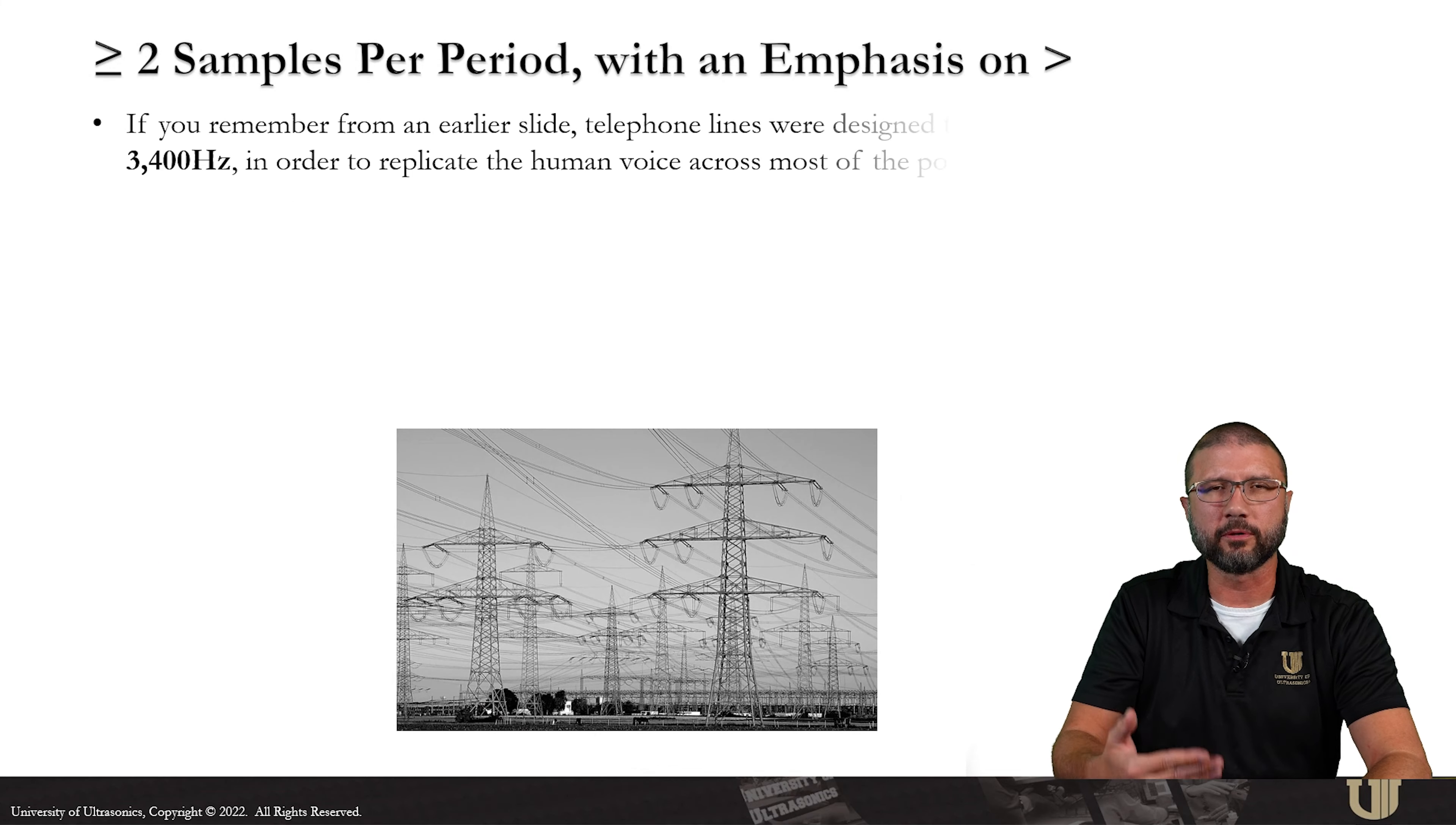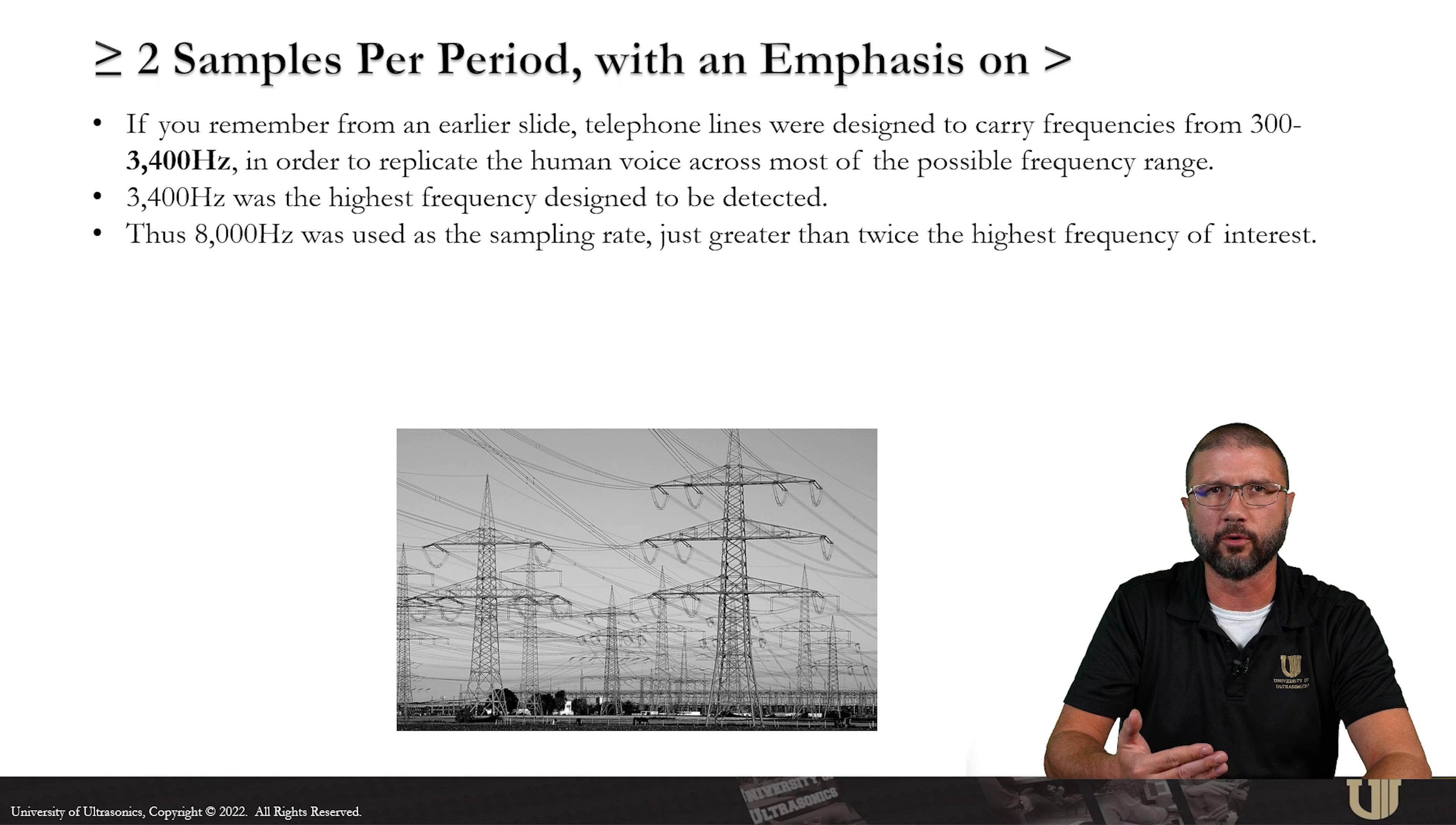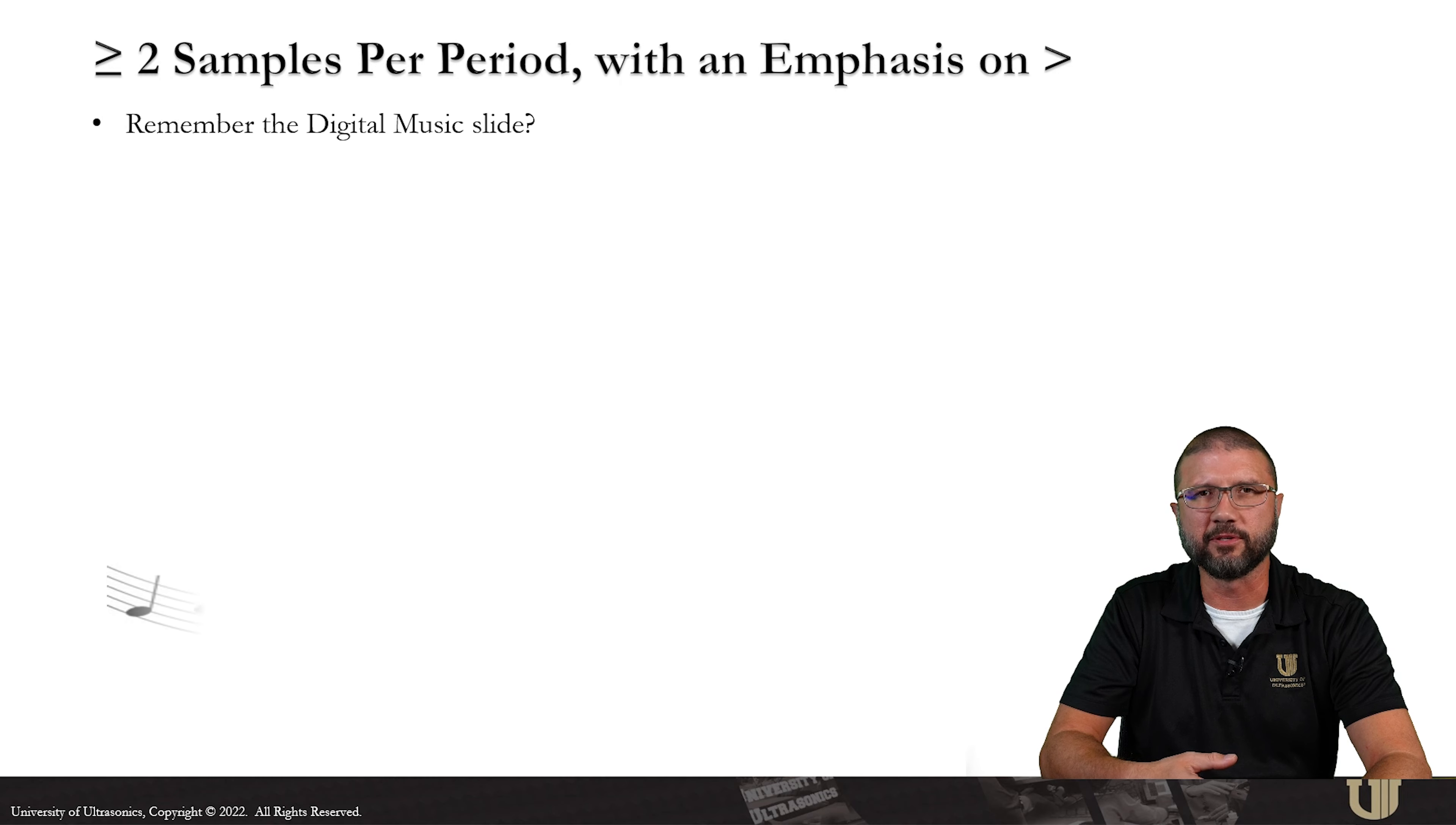So we've talked about that we need greater than or equal to two samples per period, but we're going to put an emphasis on the greater than part. If you remember from the telephone slides, the telephone lines were designed to carry frequencies up to about 3,400 hertz. We used 8,000 hertz for our sampling frequency. 8,000 hertz divided by 3,400 hertz is going to tell us that we had about 2.3 samples per period. So according to Nyquist, any sampling frequency greater than twice the highest frequency of interest should ensure that we can detect and measure that signal.